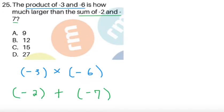item 25, the product of negative 3 and negative 6 is how much larger than the sum of negative 2 and negative 7. So let's try to get these numbers individually. So the product of negative 3 and negative 6. So we know the rule, two negatives, so negative times negative gives us a positive number. So we expect the number to be positive. So just multiply 3 and 6, this gives us positive 18.